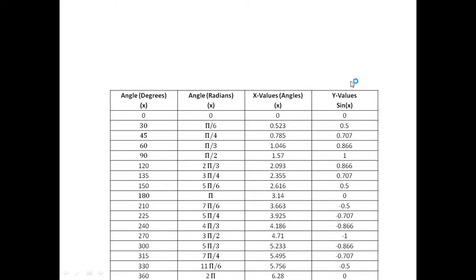The fourth column is y-values, that is sin x, meaning sine of the angle. For 0 degrees, sin 0 is 0. For 30 degrees, sin 30 is 1 by 2, that means 0.5. Similarly, sin 45 degrees is 1 by root 2, that means 0.707, and so on. You can observe some negative values are also there because of sine in the third quadrant and fourth quadrant, as we have already discussed.